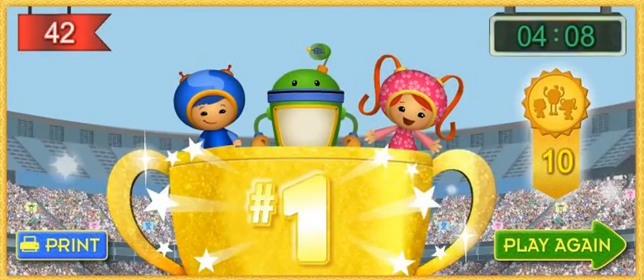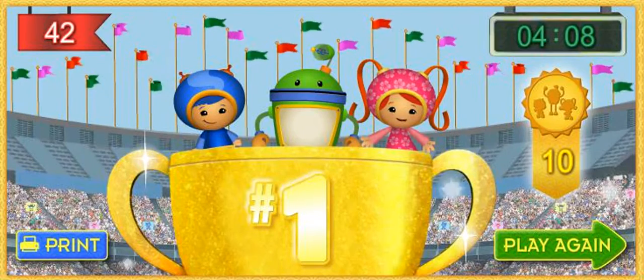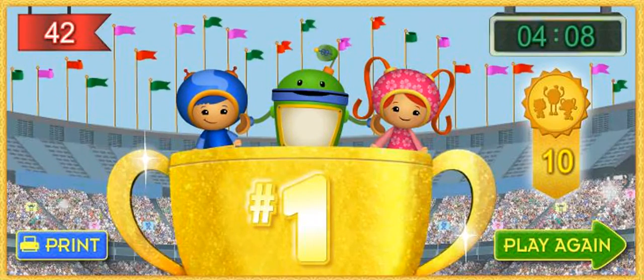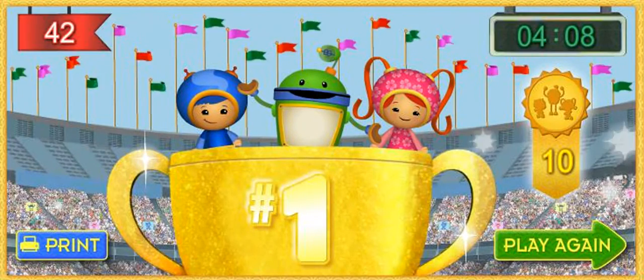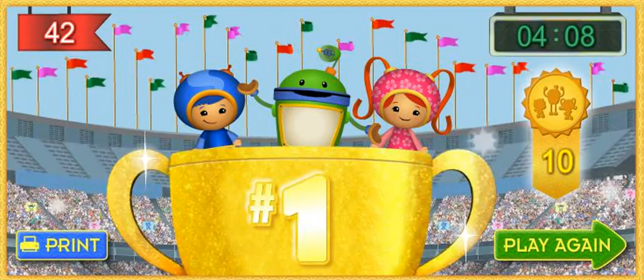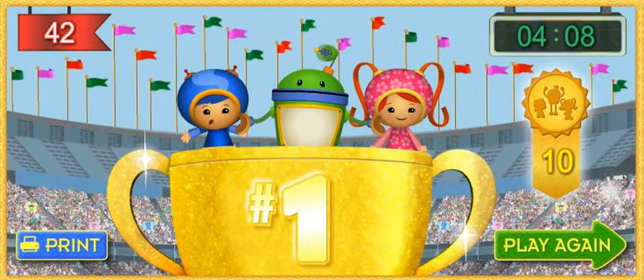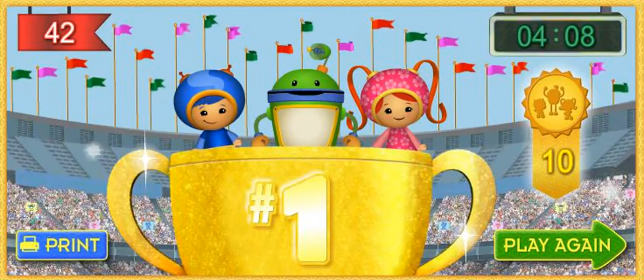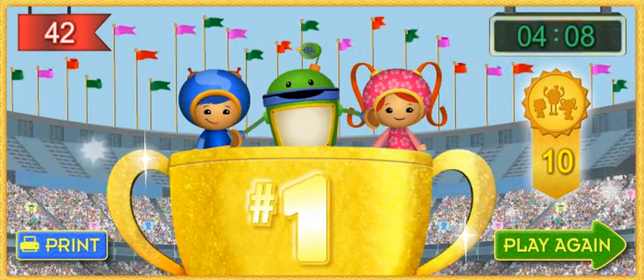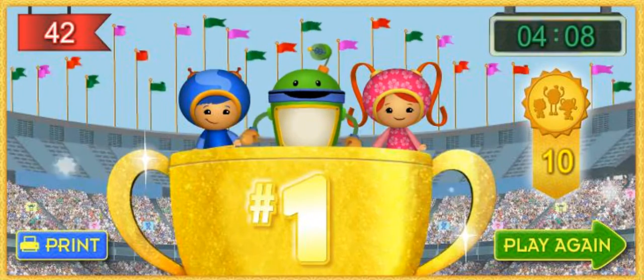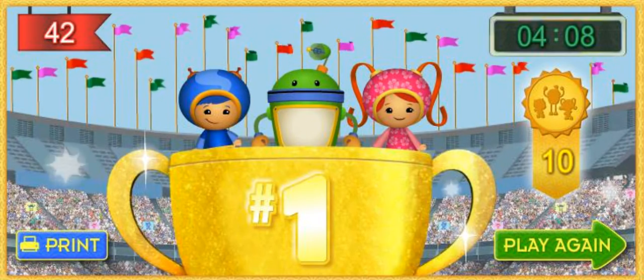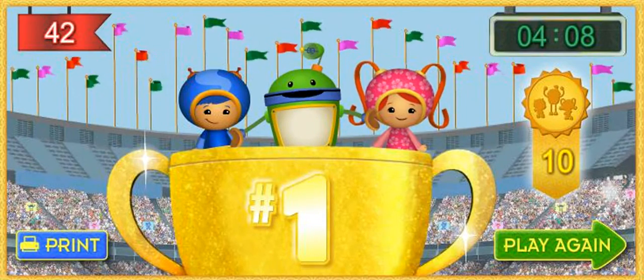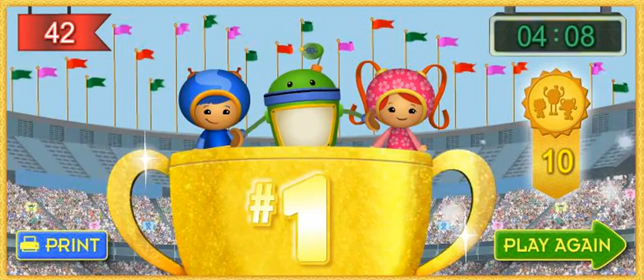We couldn't have done it without your help, Umi friend. Thanks for helping us get this shiny first place trophy. And look! We collected 42 flags and 10 stunt medals. Umi friend, you deserve a special medal of your own. Click print to print it out. Or click play again to climb back on the Umi bike and race again. Click print to print a special racing medal. Click play again to play again.